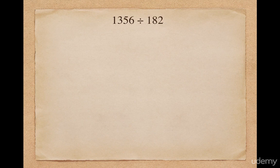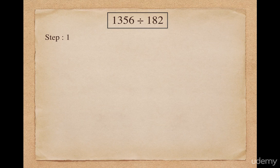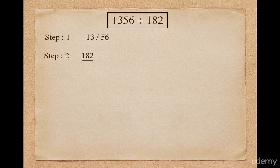Let's take one more example. Suppose I want to divide 1356 by 182. This divisor starts with 1 and it is closer and greater than a power of 10. As a first step, I split 1356 into quotient and remainder. Here the divisor has 3 digits so the remainder will have only 2 digits, so 1356 will be split into 13 and 56. I apply the concept of transpose and apply — I discard the first digit of 182 and take the transpose of the remaining digits, giving me 8-bar and 2-bar.